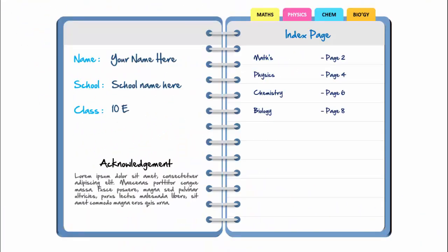In today's tutorial I'm going to show you a template that can be beneficial for both teachers and students as well as for working professionals. I've created this open book design in PowerPoint where you can add your name, the school name, the class section, and give some detailed text. On the right side I've used an index page where I've added different subjects like maths, physics, chemistry, and biology, with maths on page two, physics on page four, chemistry on page six, and biology on page eight.